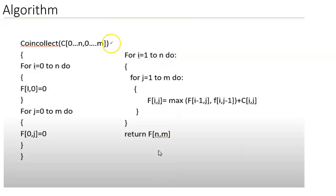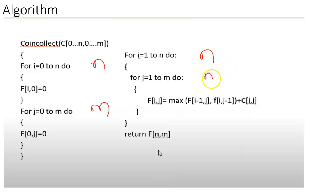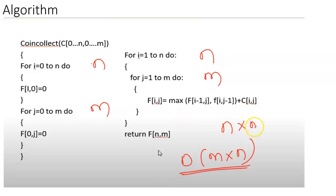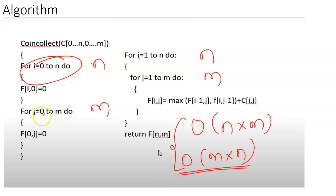The time complexity of this algorithm can be calculated directly. The first initialization loop varies up to n and the second up to m. In the main nested loop, one loop varies from one to n and the other from one to m. This gives a time complexity of the order O(n × m), or equivalently O(m × n) — both are the same. I hope you have understood the coin collection problem and its algorithm. Thank you.